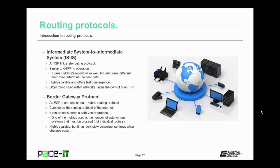Then there's Border Gateway Protocol, BGP. It's an exterior gateway protocol that's also a hybrid routing protocol, and it is considered the routing protocol of the internet. As a hybrid protocol, it is often considered a path vector protocol, which makes it a hybrid. One of the metrics used is the number of autonomous systems that must be crossed, not individual routers.